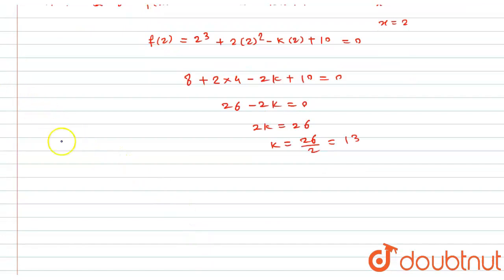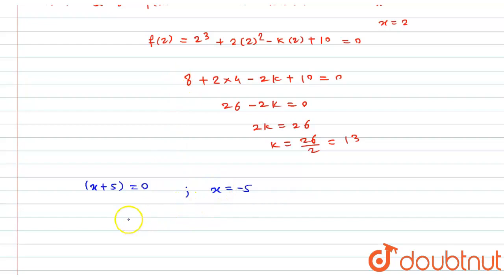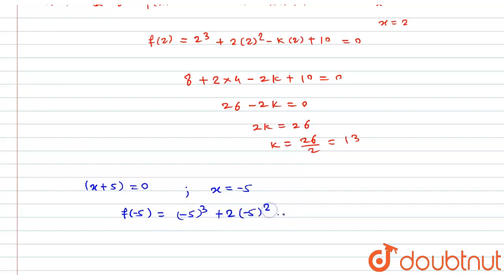It is also asked in the question whether (x plus 5) is a factor of this equation or not. For that, I equate x plus 5 equals 0, giving x equals minus 5. I will now substitute x equals minus 5 into f(x): f(minus 5) = (minus 5)³ + 2 × (minus 5)² minus 13 × (minus 5) plus 10.